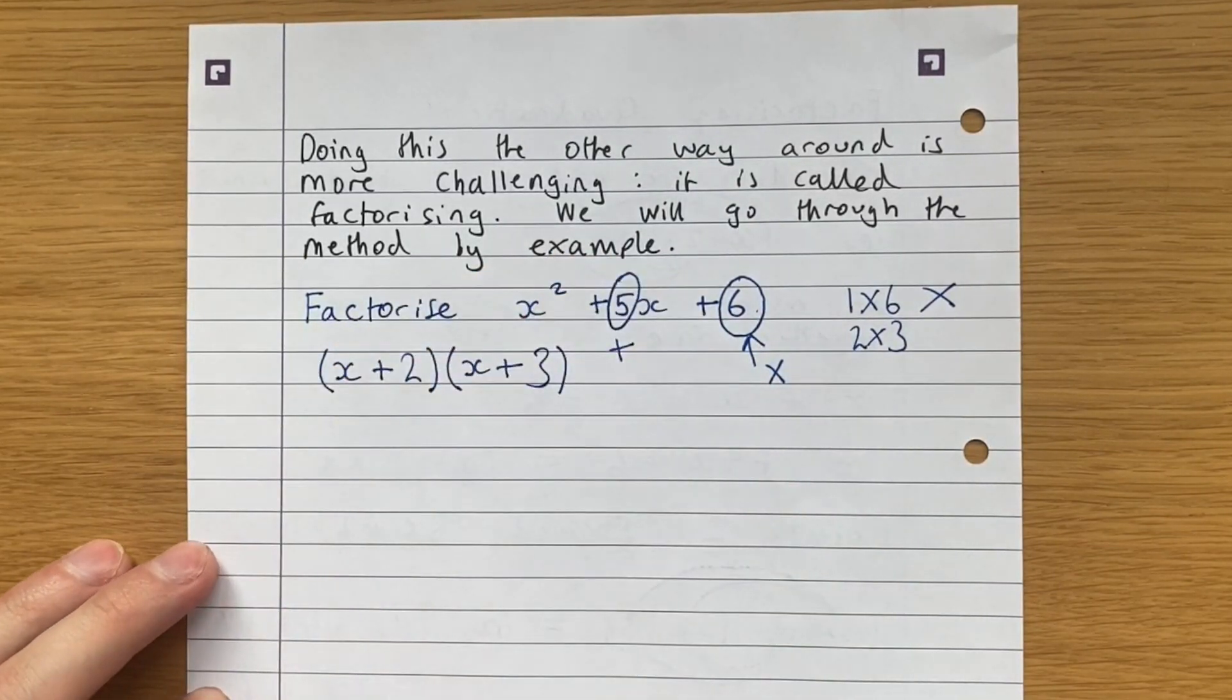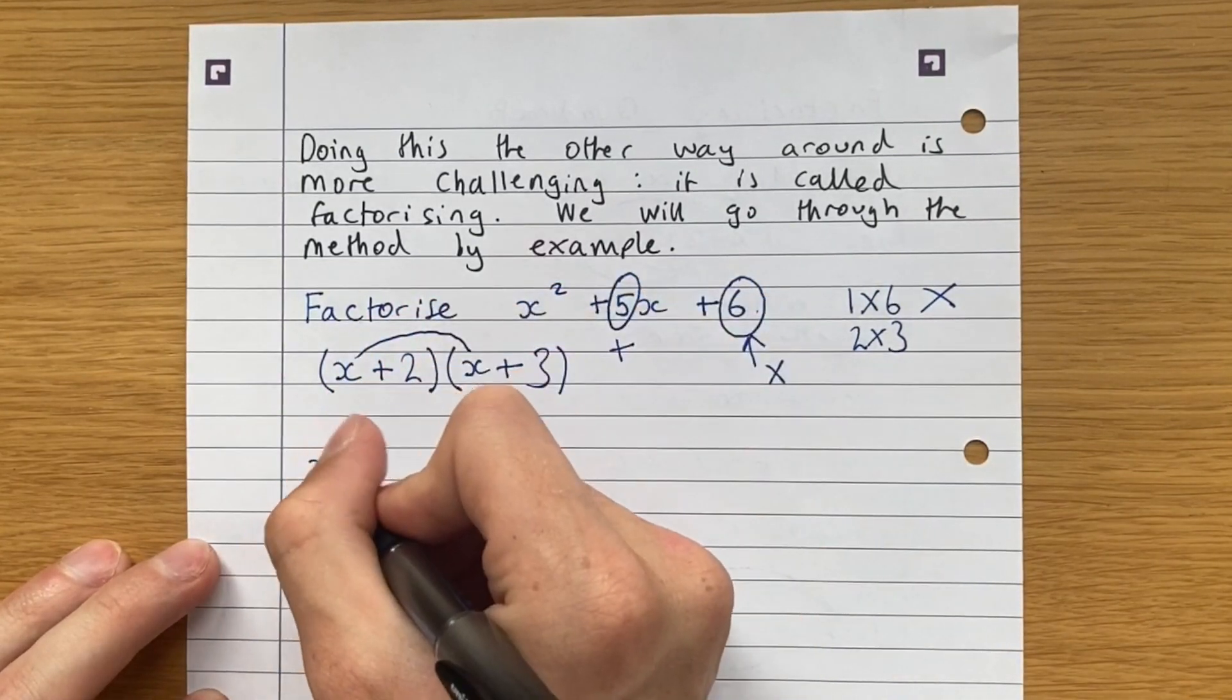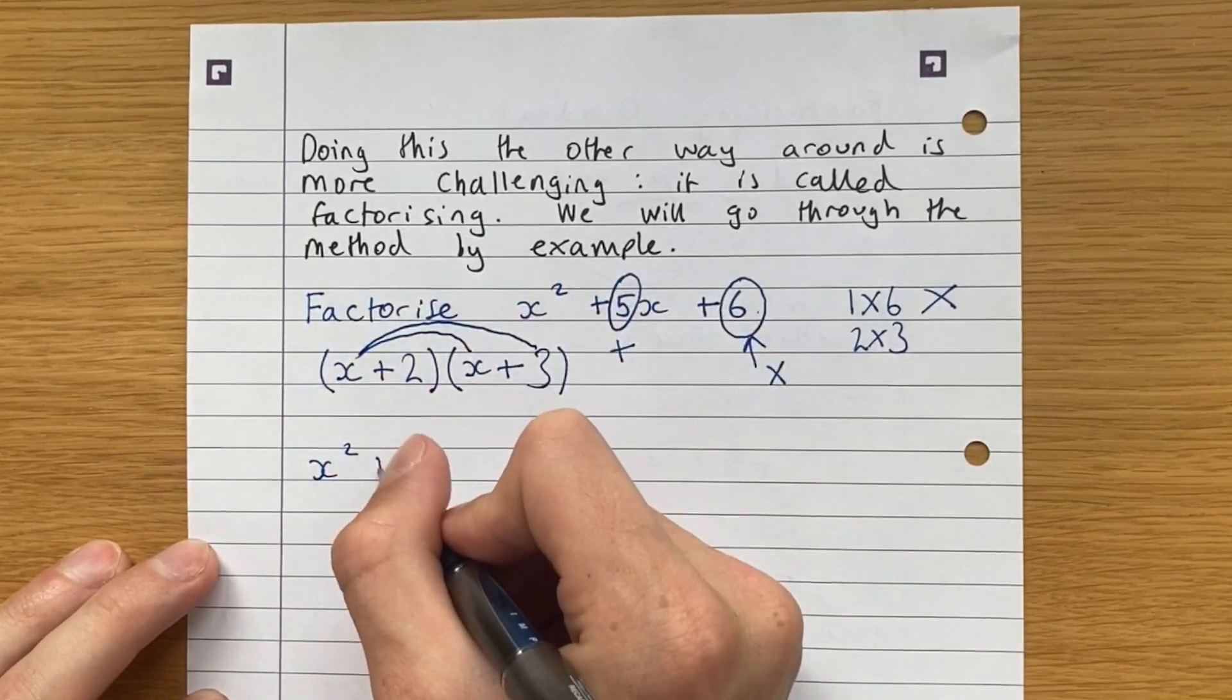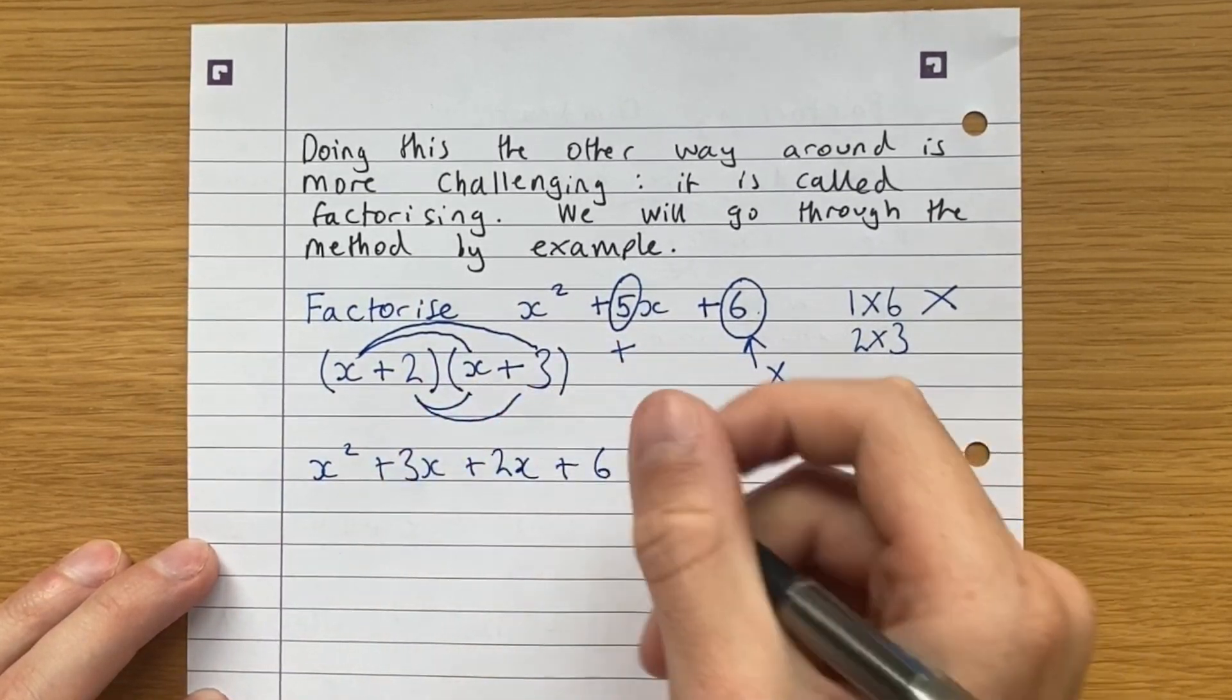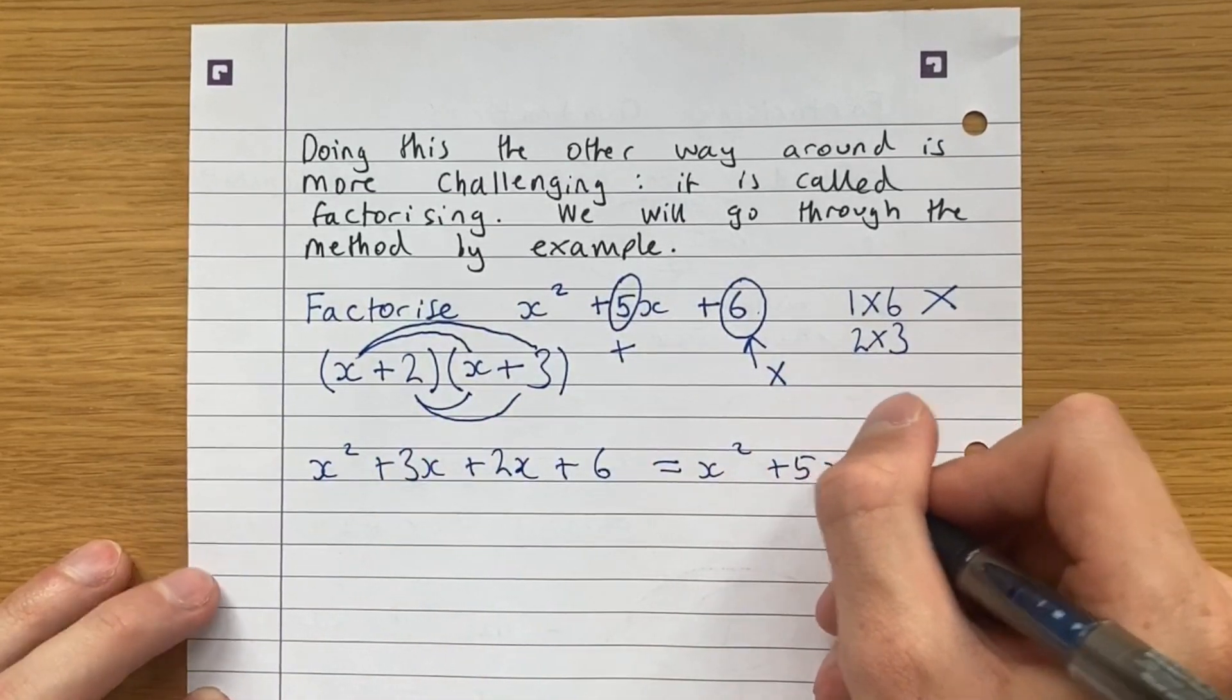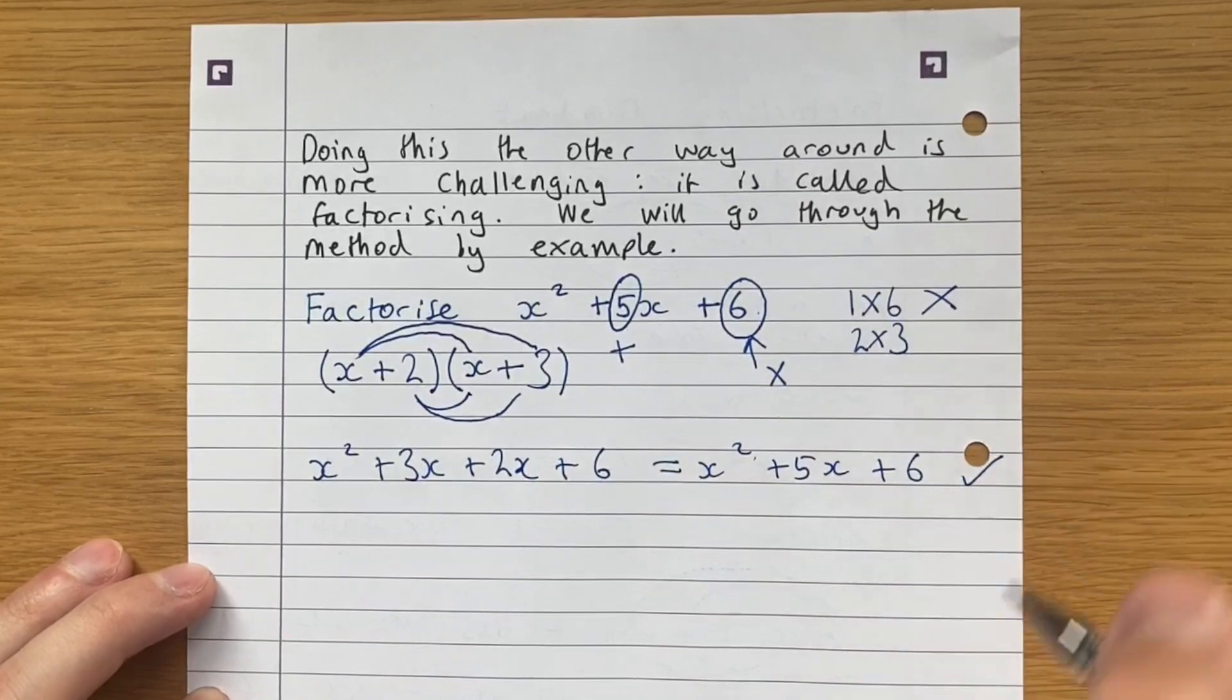we just expand it to make sure it's the same as this. So x times x is x squared. x times 3 is 3x. x times 2 is 2x. And 2 times 3 is 6. And this is equal to x squared. 3x plus 2x is 5x. And that's exactly what we have written up here. So that's correct.